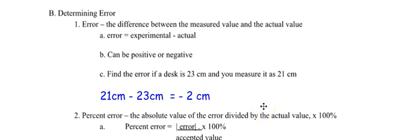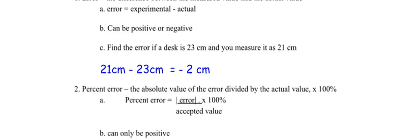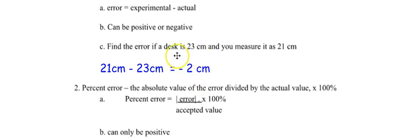When you are subtracting units, you just keep the unit — they don't cancel out, so your error still has a unit. Then you have something called percent error, which I think is more useful for looking at your data. It is the absolute value of your error divided by the actual value, multiplied by 100%. The absolute value is always the positive value, so if it's negative 2 centimeters, it will be positive in your math.